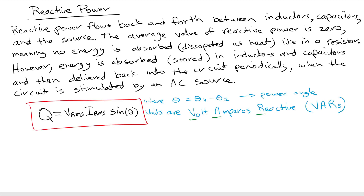In summary, using the same formula from the power triangle, Q is the RMS voltage times the RMS current multiplied by the sine of the power angle. The interesting thing to note is that the units are in VARs, which stands for Volt Amperes Reactive — so that's different than watts.